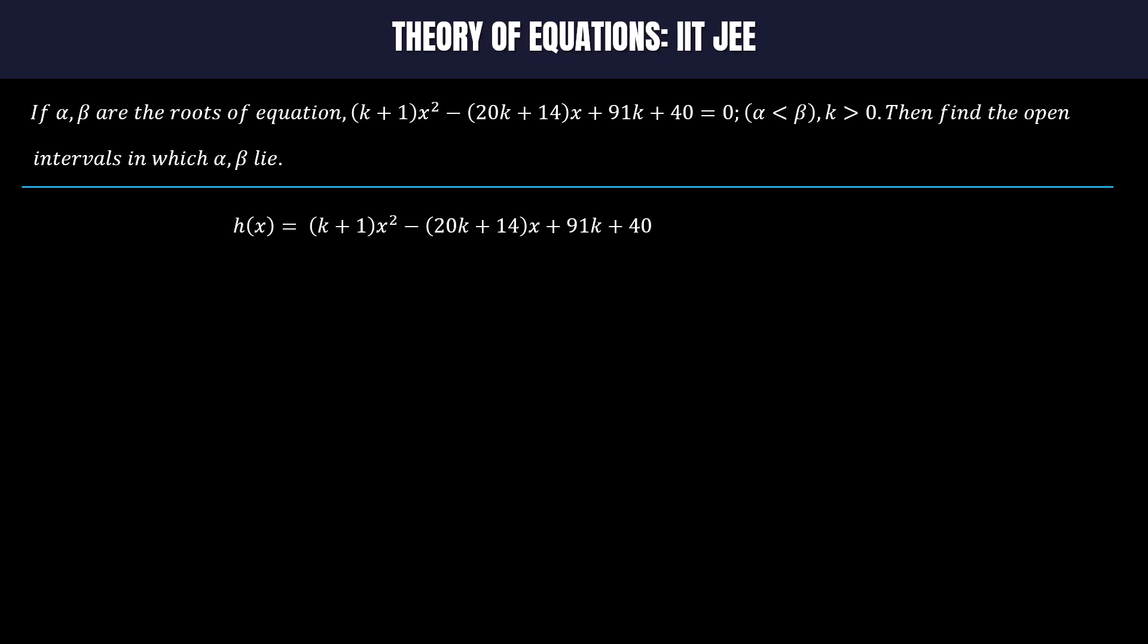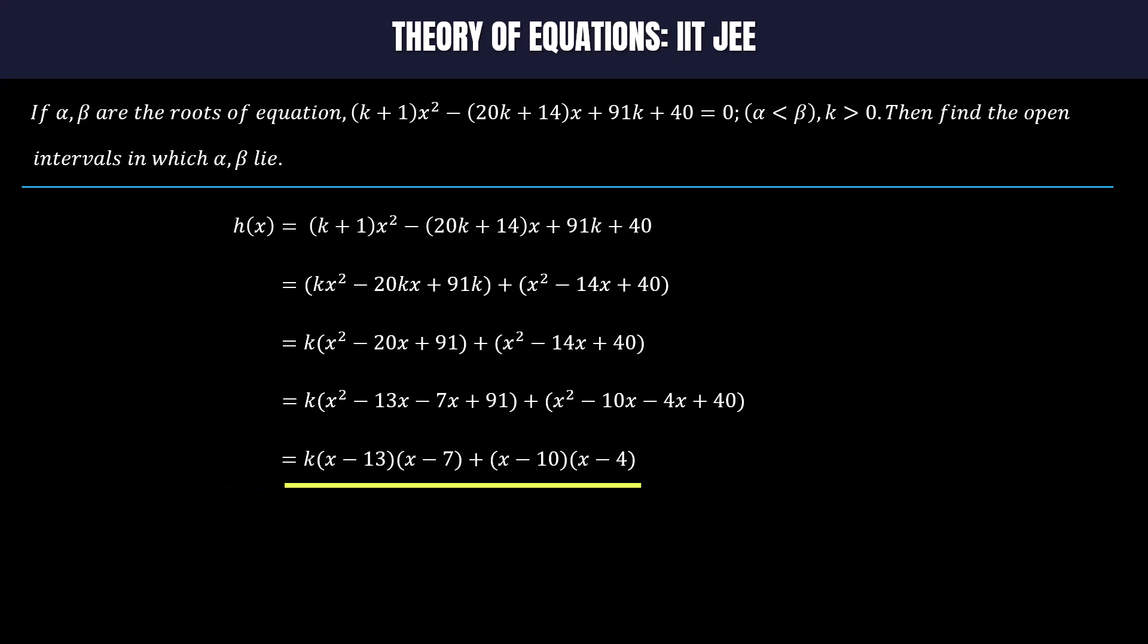Now h(x) can be written as a linear combination of two quadratic polynomials as k(x² - 20x + 91) + (x² - 14x + 40). After factorization of each quadratic we get k(x-13)(x-7) + (x-10)(x-4), which can be further written as f(x) + g(x), where f(x) = k(x-13)(x-7) and g(x) = (x-10)(x-4).